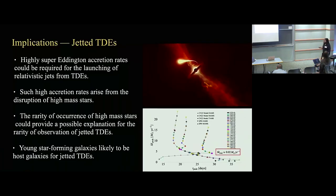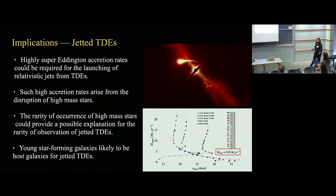We can now use this model to make predictions for observations. The first important one is in the context of jetted TDEs. The driving mechanism for jetted TDEs is the subject of ongoing research, but we all agree we need super-Eddington accretion rates for launching relativistic jets in TDEs. As we show using this model, such super-highly super-Eddington accretion rates are likely to arise from the disruption of high mass stars. If you need orders of magnitude higher than super-Eddington accretion rates, you need to disrupt high mass stars. We can correlate the rarity of observation of these jetted TDEs with the rarity of high mass stars in our universe, since these stars are rare in the initial mass function and because they live shorter lives. This also yields a likely prediction that host galaxies of jetted TDEs are young star-forming galaxies with more high mass stars.